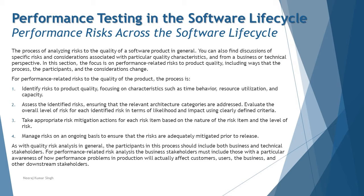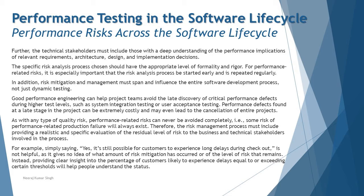As with quality risk analysis in general, participants in this process should include both business and technical stakeholders. Business stakeholders contribute from the quality expectations point of view, while technical stakeholders address how to achieve them. For performance-related risk analysis, business stakeholders must include those aware of how performance problems in production affect customers, users, and downstream stakeholders, while technical stakeholders must have a deep understanding of the performance implications of requirements, architectural design, and implementation decisions.